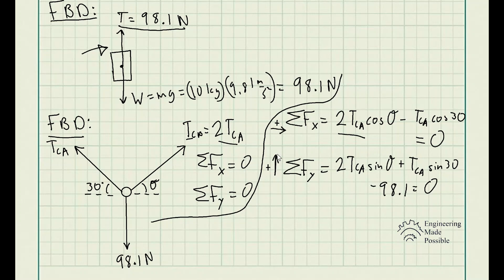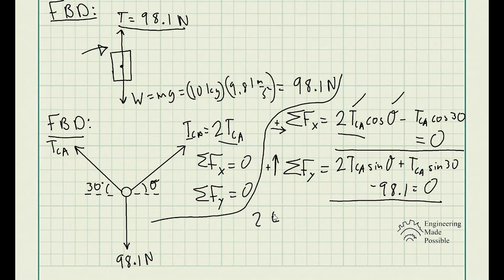For the sum of forces along Y, with upward positive, we have: 2TCA sine θ + TCA sine 30° − 98.1 = 0 for static equilibrium. We now have two equations with two unknowns: TCA and theta. With two equations and two unknowns, we're able to solve for these variables. We can solve one equation for one unknown, then substitute into the other.